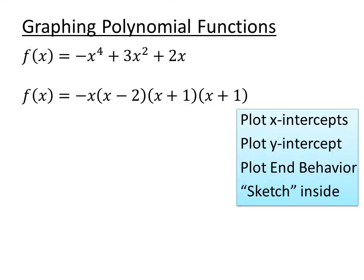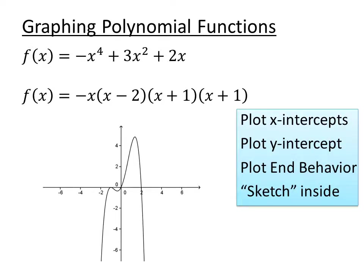Here is another example — try to graph this polynomial using the methods we saw before. The graph looks like this. You should have been able to find the zeros: since x is a factor by itself, 0 is an x-intercept, meaning the graph crosses through the origin. There are also x-intercepts at 2 and negative 1. Something peculiar about this function is that the factor (x plus 1) appears twice — sometimes written as (x plus 1) squared. We'll talk more about this in a moment.